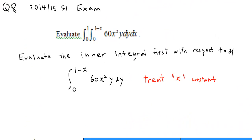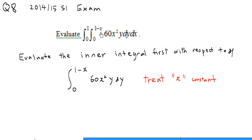This is question 8 of the 2014/15 semester 1 exam. We are going to evaluate a double integral: the integral of 60x²y dy dx, where the limit of x is from 0 to 1 and the limit of y is from 0 to 1 minus x.